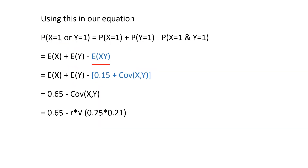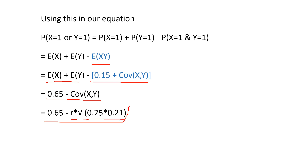Putting E[XY] = 0.15 + Cov(X,Y) into our expression, with E[X] + E[Y] = 0.5 + 0.3 = 0.8, we get P(X=1 or Y=1) = 0.65 minus Cov(X,Y). Writing the covariance in terms of the correlation r and the standard deviations, we obtain the expression: P(X=1 or Y=1) = 0.65 minus r times sqrt(0.25) times sqrt(0.21).